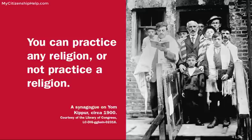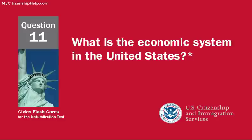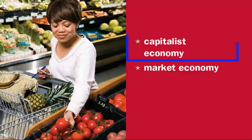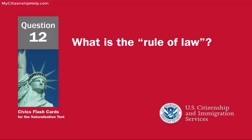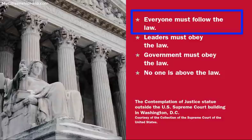What is the economic system in the United States? Capitalist economy. What is the rule of law? Everyone must follow the law.